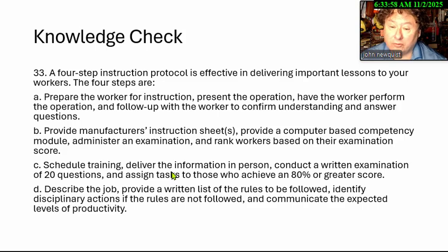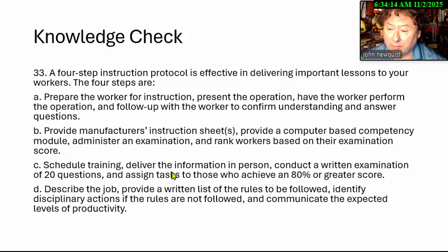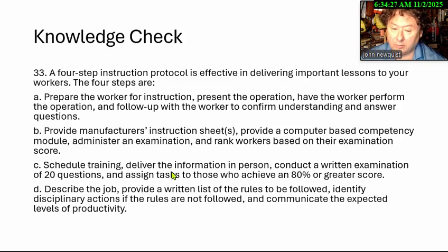The four-step instruction protocol is effective in delivering important lessons to your worker. The four steps are: A. Prepare the worker for instruction, present the operation, have the worker perform the operation, and follow up with the worker to confirm understanding and answer questions. B. Provide manual instruction sheets, manufacturer's instruction sheets, provide a computer-based competency module, administer an examination, and rank the workers based on their scores. C. Schedule training, deliver the information in person, conduct written examinations of 20 questions, and assign tasks to those who receive 80% or greater scores. D. Describe the job, provide a written list of rules to be followed, identify the disciplinary action if the rules aren't followed, and communicate the expected levels of productivity.